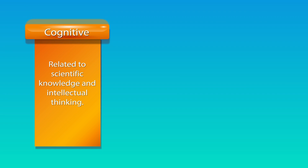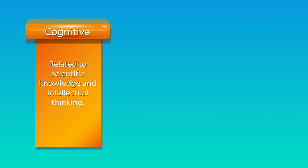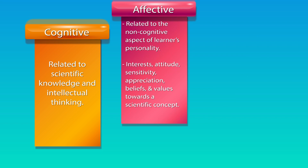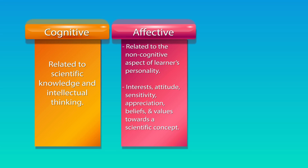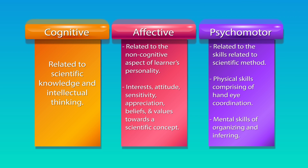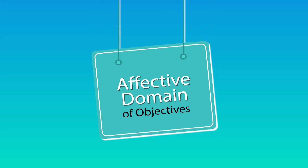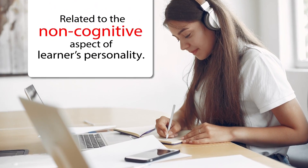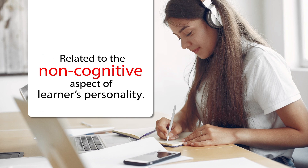The first is the cognitive domain, which is related to knowledge and intellectual thinking — in science, this relates to scientific knowledge and intellectual thinking. The second is the affective domain, which is related to the non-cognitive aspect of the learner's personality, involving interest, attitude, sensitivity, appreciation, beliefs, and values towards a scientific concept. The third is the psychomotor domain, related to skills — physical or mental — associated with scientific method. In this presentation, we will look in detail at the affective domain, which is related to values.